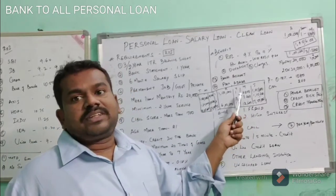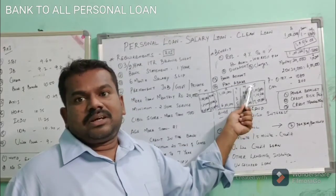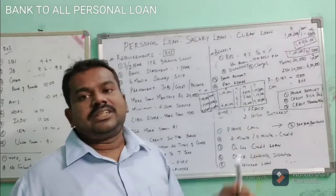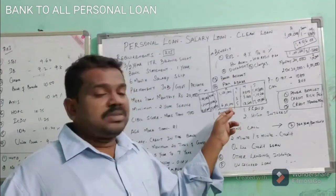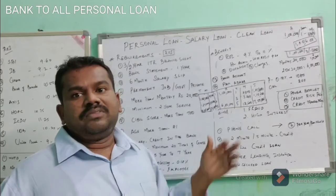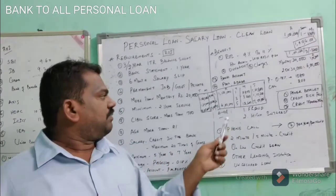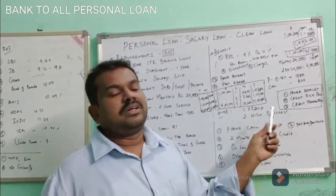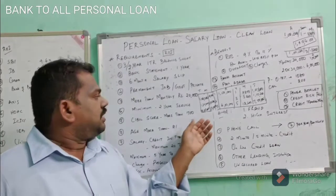For a ₹1 lakh loan for one year at 9% interest, the monthly EMI is about ₹8,800. Over 12 months, you pay only ₹5,600 extra as interest. For a ₹6 lakh loan over five years, the EMI is ₹12,600 and the total amount paid is ₹7,50,000.